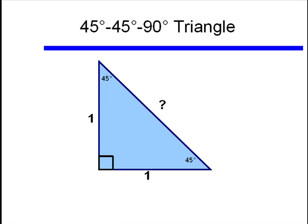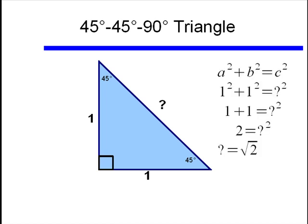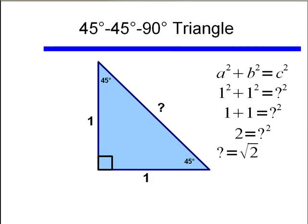I could have chosen any length, but one makes it a little bit easier. So if I have my Pythagorean theorem, and I say one squared plus one squared is that hypotenuse length squared, we find the length of the hypotenuse to be square root of 2.